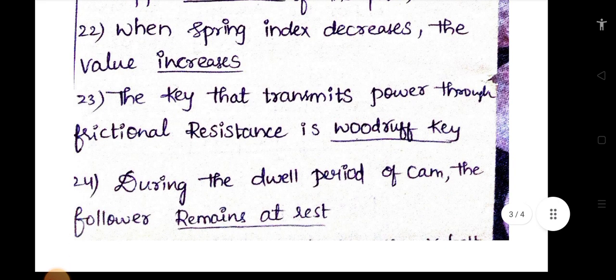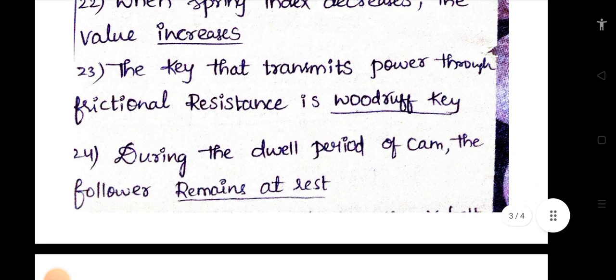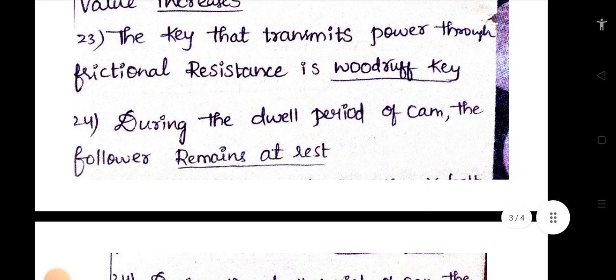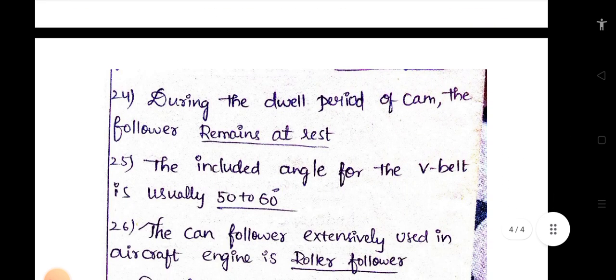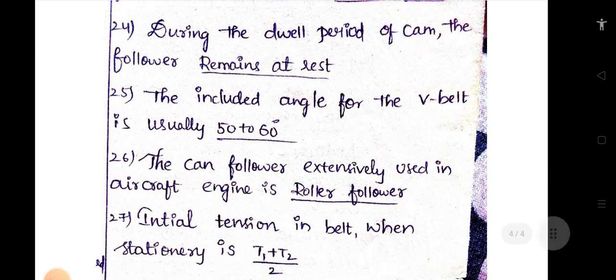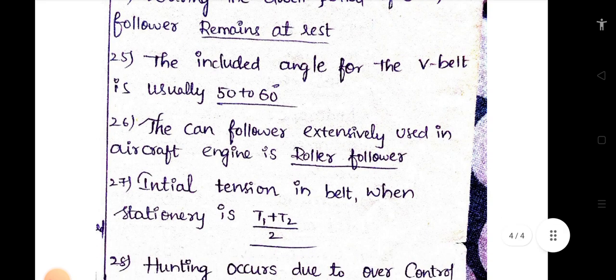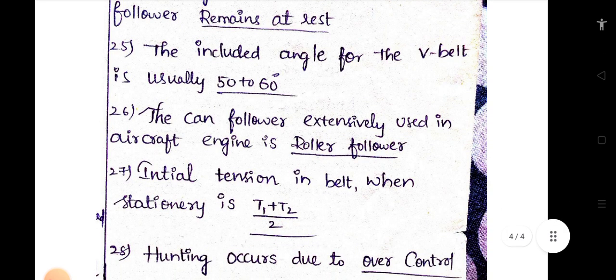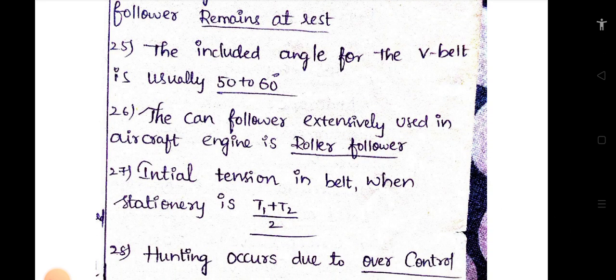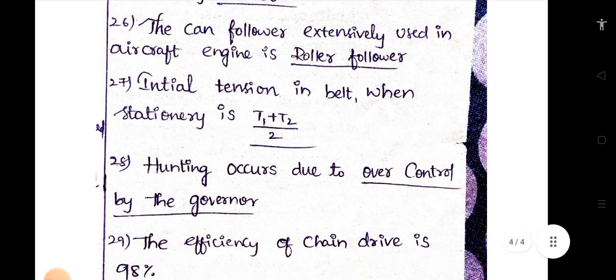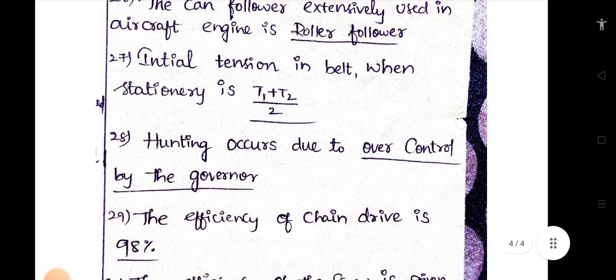The key that transmits power through frictional resistance is Woodruff key. During the dwell period of cam, the follower remains at rest. The included angle for the V belt is usually 50 to 60 degrees. The cam follower extensively used in aircraft engines is roller follower. Initial tension in belt when stationary is T1 plus T2 by 2. The hunting occurs due to the power control by the governor.